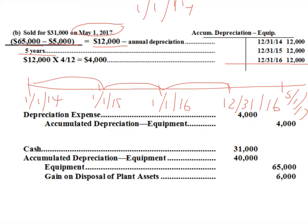To calculate gain or loss on sale, you must update your records first. We have a partial year that has not been recorded yet. Be careful — count the months: January, February, March, and April, and then it's May 1st. So we have four extra months of depreciation to record. Take the annual depreciation expense multiplied by four-twelfths.